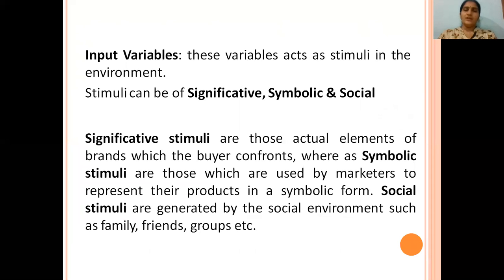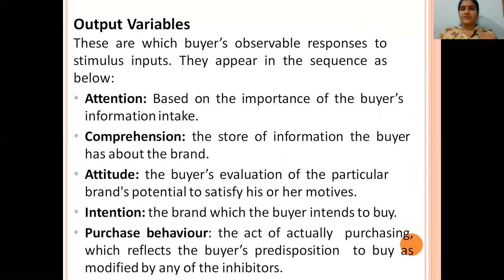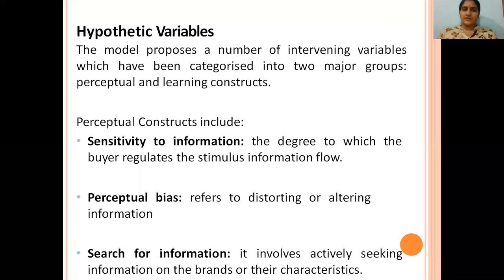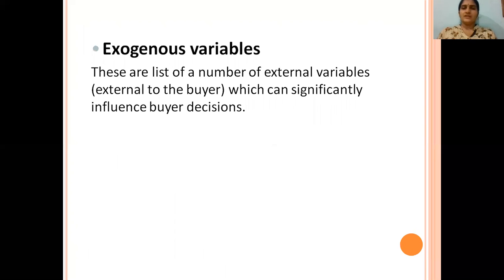In detail, we saw that input variables include significative, symbolic, and social stimuli. Output variables include attention, comprehension, attitude, intention, and purchase behaviour. Hypothetical variables are categorized under two major groups: perceptual and learning constructs. Exogenous variables are external variables that influence the buyer in making their buying decision. In today's class we discussed the Howard-Sheth model of consumer buying behaviour. I hope you have understood. Thank you for listening.